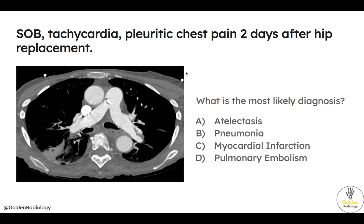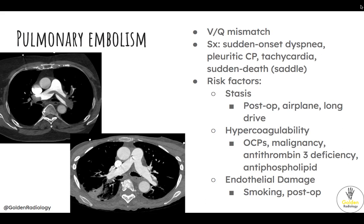Here's another pulmonary embolus with a slightly more subtle imaging and clinical presentation: shortness of breath, tachycardia, pleuritic chest pain two days after hip replacement. On CT, we see a little bit of thrombus here and here. Rather than a saddle PE, this would likely be a lobar or segmental pulmonary embolus. We also see parenchymal changes likely representing infarcted lung tissue. Pulmonary embolism leads to hypoxia by causing a VQ mismatch — Q (perfusion) decreases while V (ventilation) remains the same. Clinical symptoms include sudden onset dyspnea, pleuritic chest pain, tachycardia, and sudden death, particularly with saddle pulmonary embolism.